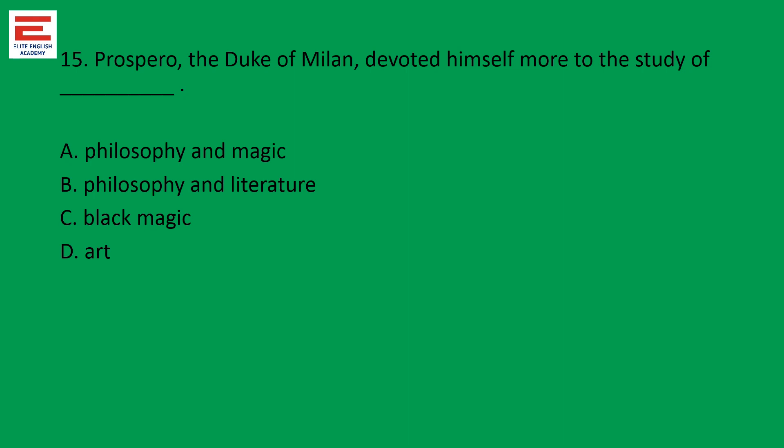Question fifteen: Prospero, the Duke of Milan, devoted himself more to the study of philosophy and magic. Art and black magic are distant options — so the answer is philosophy and magic.